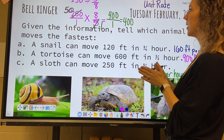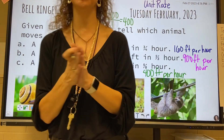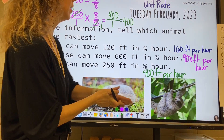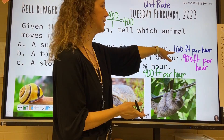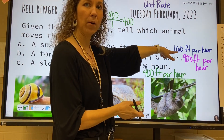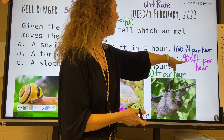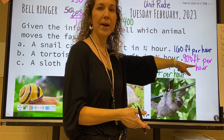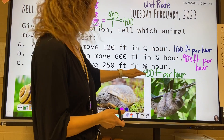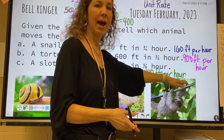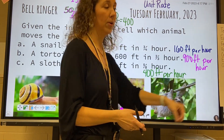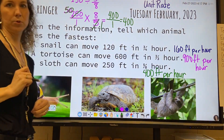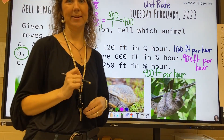We want to know which one of these animals moves the fastest, and we've got it all figured out. The snail can go 160 feet per hour — pretty slow. The tortoise can go 900 feet per hour, and the sloth is going 400 feet per hour. So the fastest animal is going to be the tortoise.